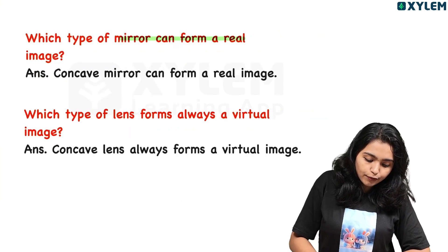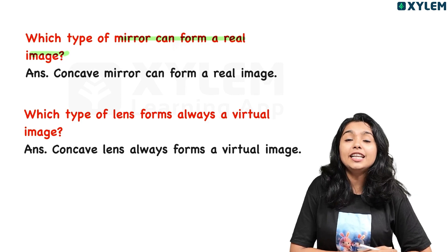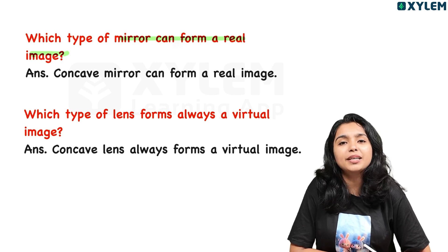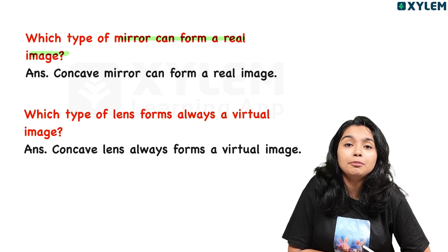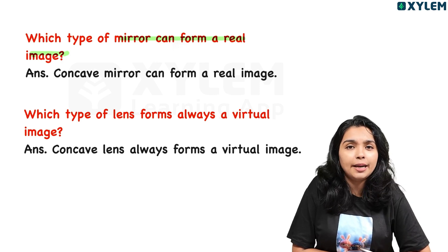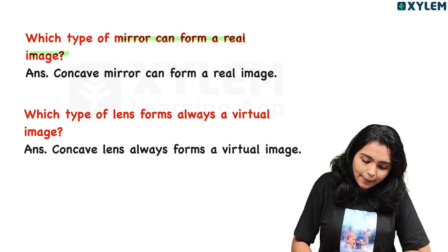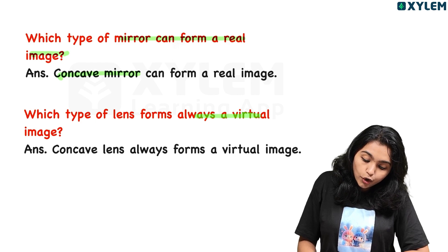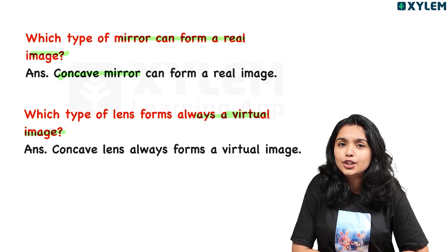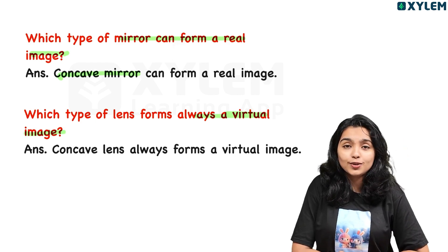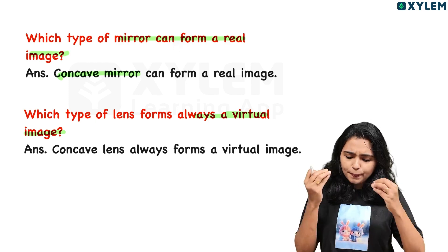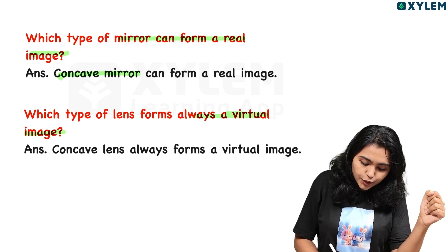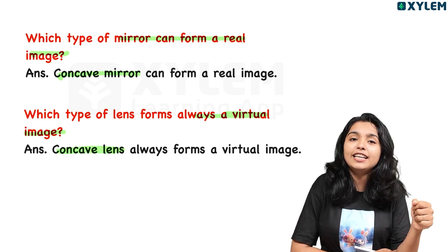We can see which type of mirror can form a real image. A concave mirror can create a real image, but sometimes it will also create a virtual image. The answer is the concave mirror. Which type of lens always forms a virtual image? The answer is the concave lens.